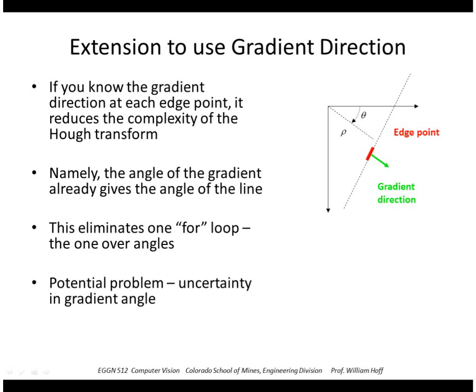Of course with noise in the gradient direction, there might be several possible line orientations that would pass through there. So we would have to search maybe over a much smaller range.